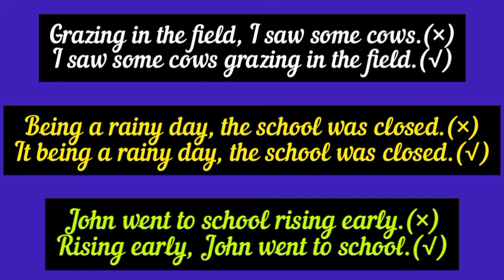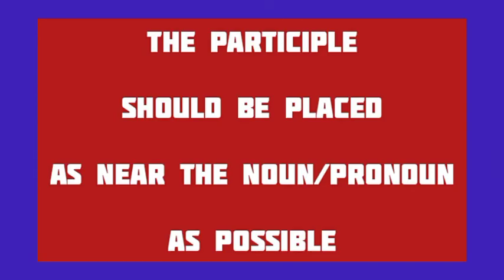Being a rainy day, the school was closed — what was a rainy day? The school? No. So the sentence is wrong. The correction is: it being a rainy day — an absolute participle — the school was closed. John went to school rising early — who rose early? The school? The sentence is wrong. Rising early, John went to school — this is the correct sentence. The position of the participle in the sentence is very important. It should be as close to the intended noun or pronoun as possible. Otherwise there will be an error of unattached participles and the wrong noun or pronoun will be ridiculously modified.